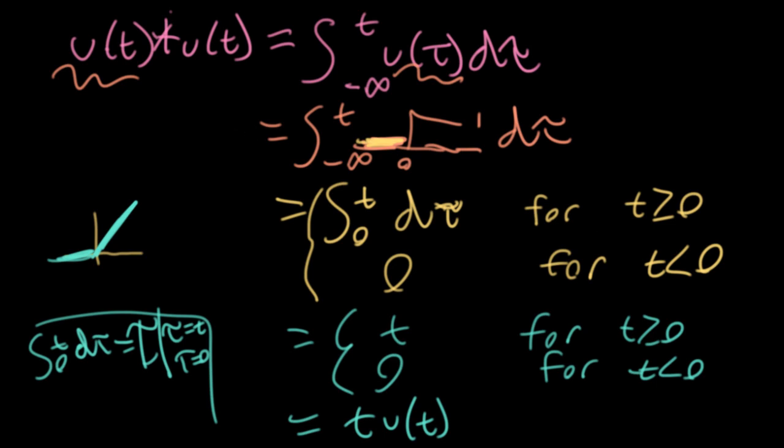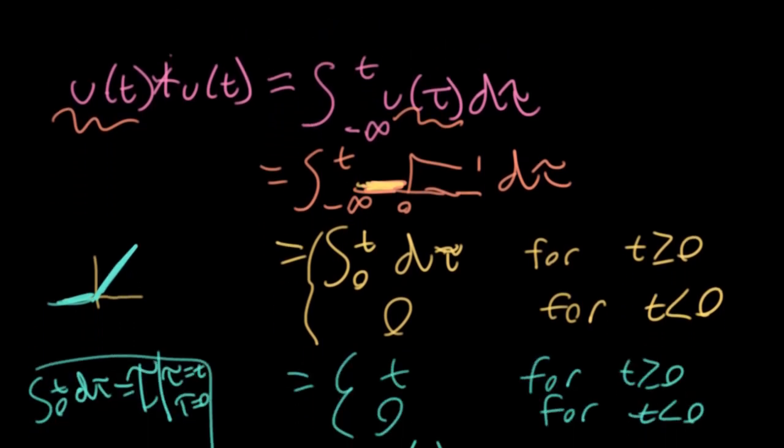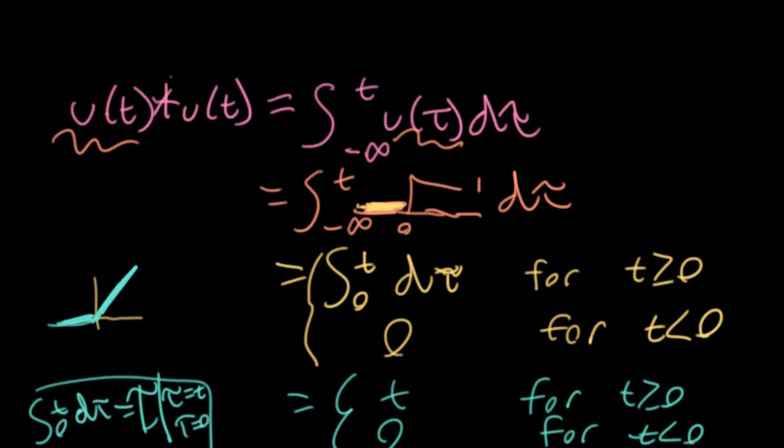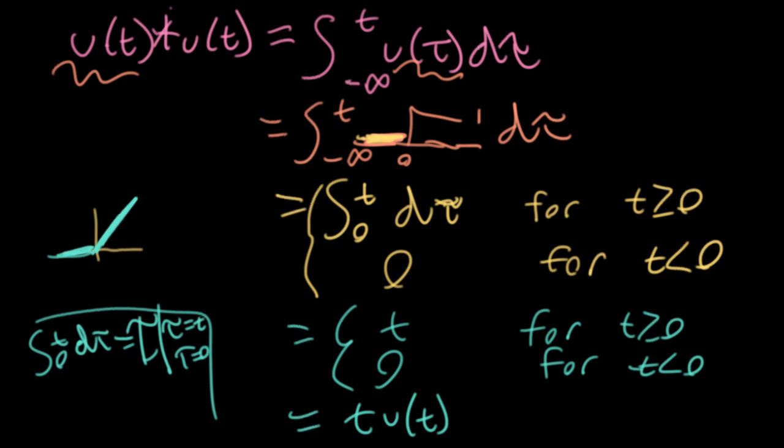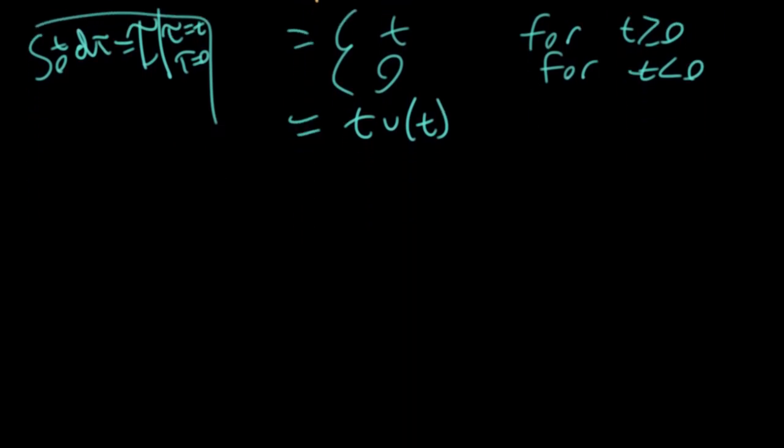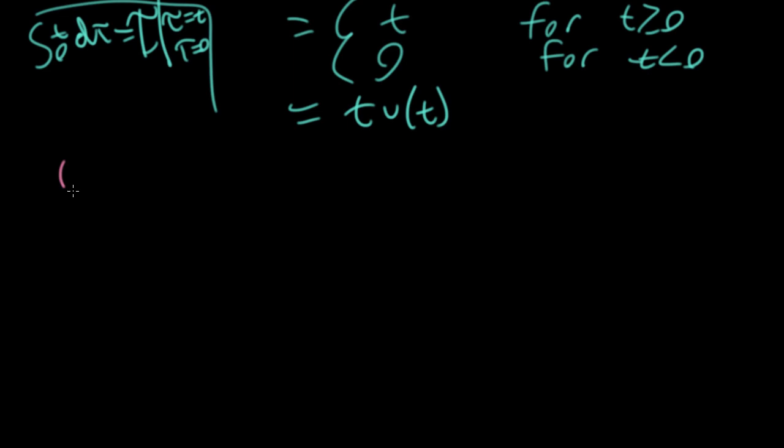All right, so then the next question that was asked is, if that's the result, it's t u(t), the next question is, what if one of these is shifted? And it doesn't really matter. I could pick either one.